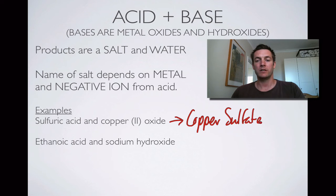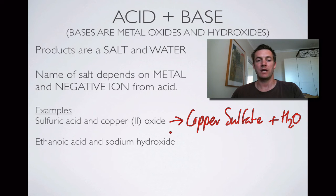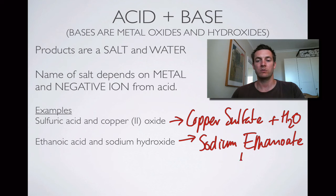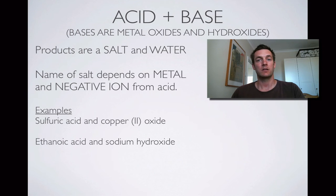In this film we're just identifying what the products will be; we'll practice writing these equations in the next couple of films. Ethanoic acid has an ethanoate ion, and here's the metal sodium in sodium hydroxide, so this is going to make sodium ethanoate. Water is the other product because we have a hydroxide — that's a base, not a metal and not a carbonate, which is coming up next.